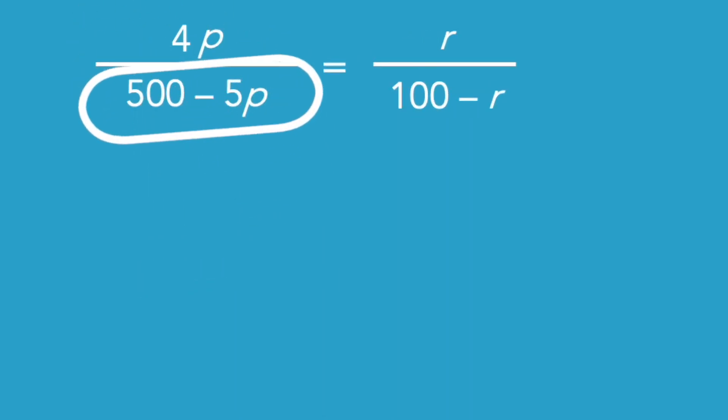But first, we should probably expand the equation by the denominators because nobody likes fractions in their equations. So if I'm multiplying both sides by 500 minus 5P, and I'm also multiplying both sides by 100 minus R, on the left-hand side, I end up with 400P minus 4PR.